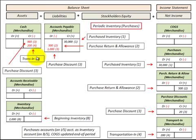Now let's look at transportation in. Say we pay $200 for transportation in cash: we credit cash and reduce it by $200, and the related entry is a debit to Transportation In, increasing it by $200.